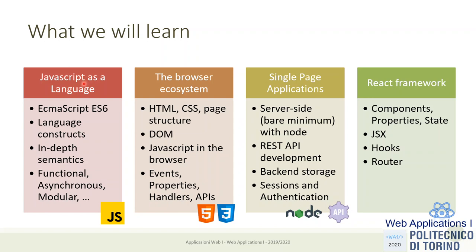The second chapter is the Browser. Front-end applications run in a browser, which is an engine that runs JavaScript and also interprets HTML and CSS files. The APIs offered by the browser to JavaScript code are very important — in particular the Document Object Model (DOM) and all the objects and APIs that browsers offer need to be understood well to create applications.